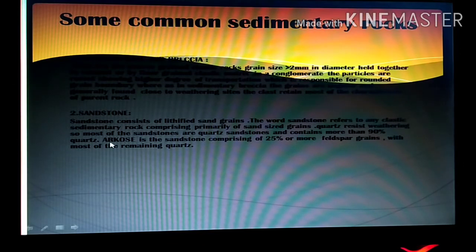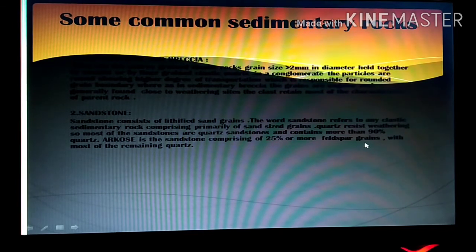A rock is said to be sandstone is categorized as arkose. If it has 25% or more feldspar grain. With most of the remaining as quartz.